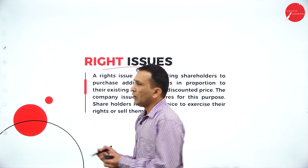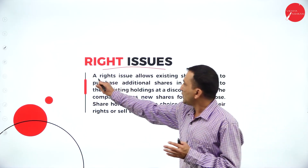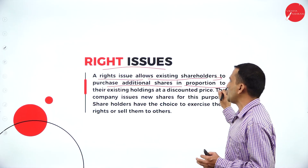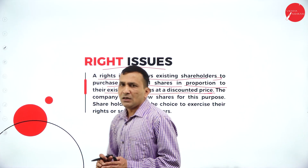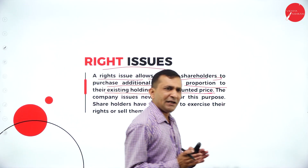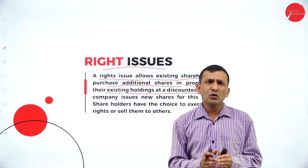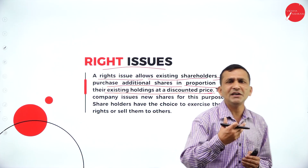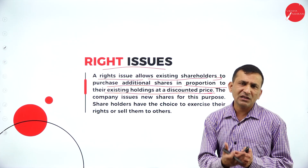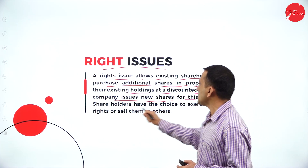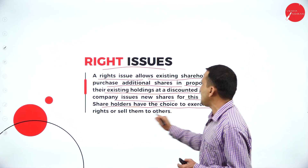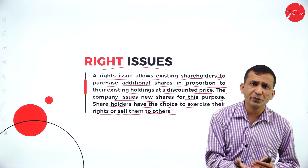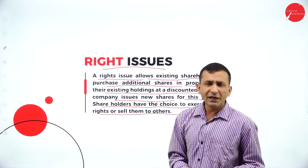Next: the rights issue. The rights issue allows existing shareholders to purchase additional shares in proportion to their existing holdings at a discounted price. Most companies, when expecting share money, instead of declaring a dividend, they give additional shares to existing shareholders — which is not applicable for new shareholders. The company issues new shares for this purpose. The shareholders have the choice to exercise their rights or sell them to others. Companies also have a buyback policy — after issuing a share, the company can also purchase it back.